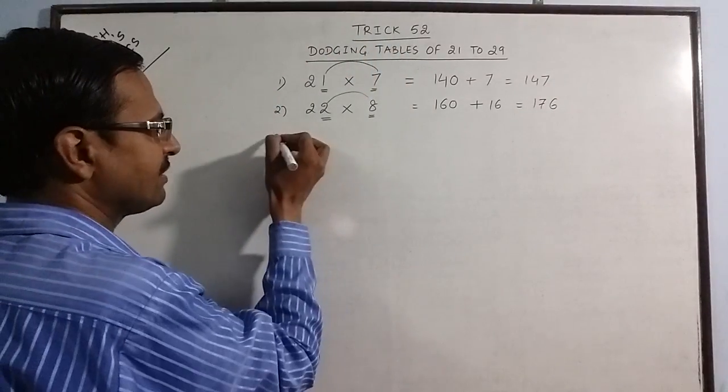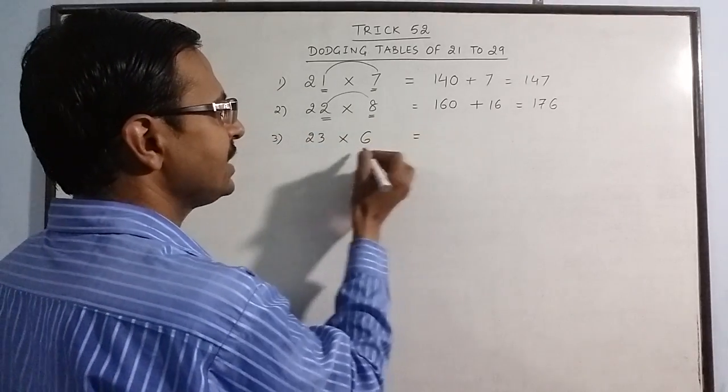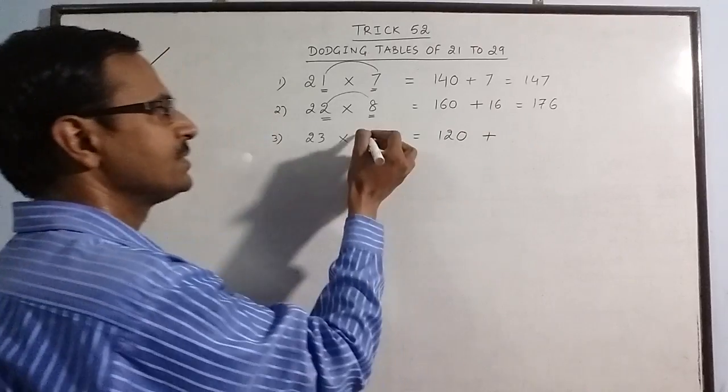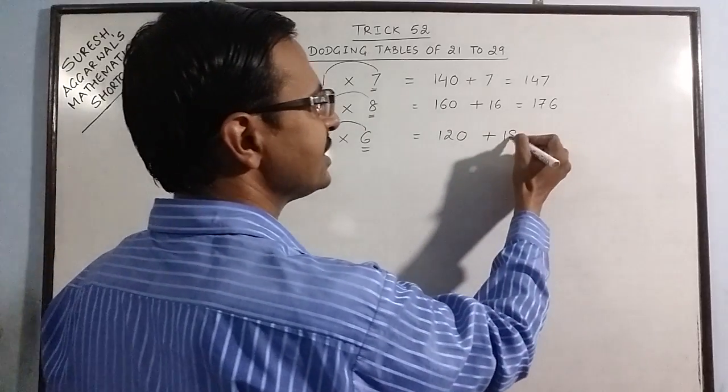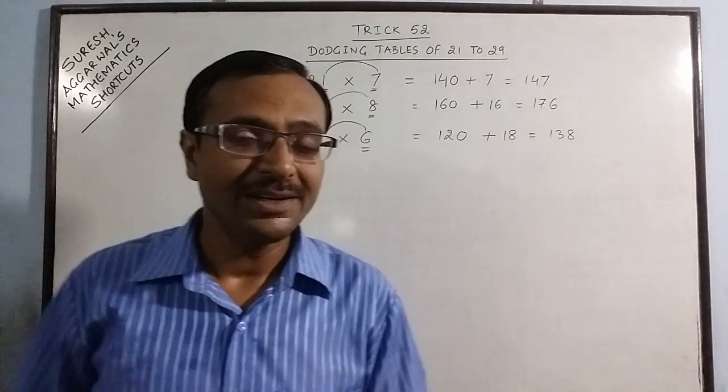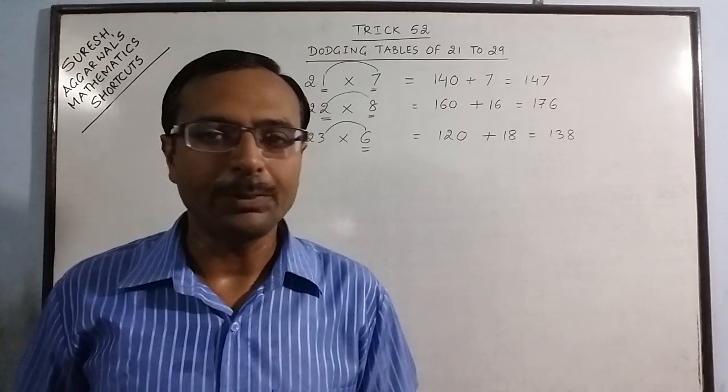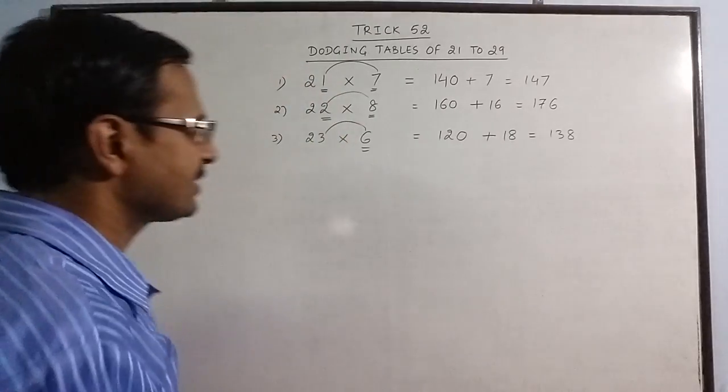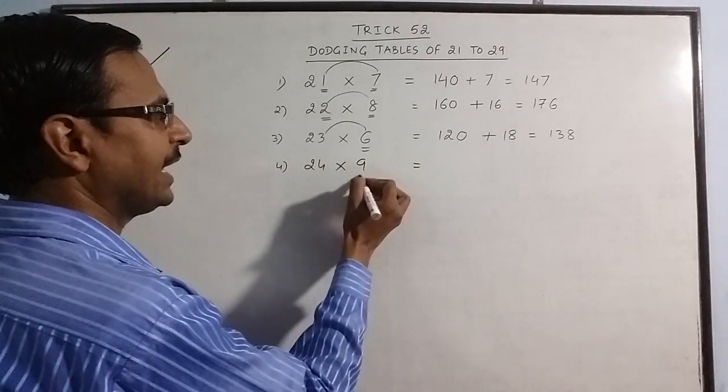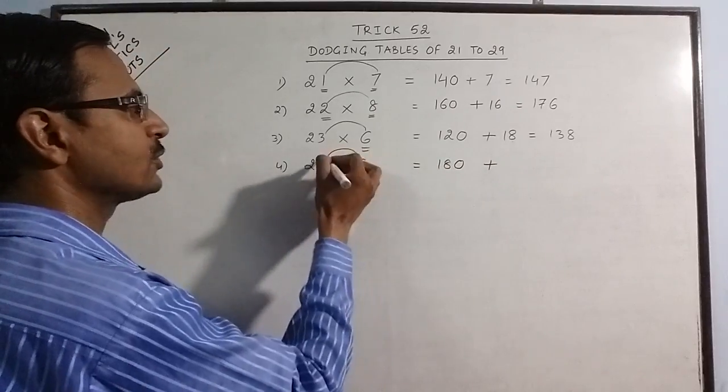Let us do more examples. Say we have 23×6. See, 6×2 is 12, put a 0, 6×3 is 18, just add: 138. Things become so simple, you know. And knowing these methods will enable you to save a lot of time in competitive exams. Some more examples: say 24×9. 9×2 is 18, put a 0, 9×4 is 36.